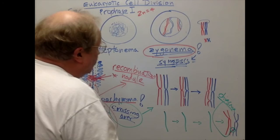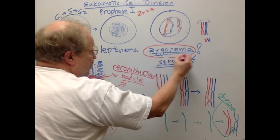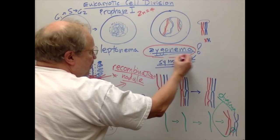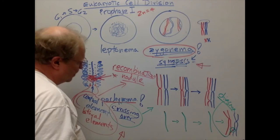A recombination nodule is assumed to be a packet of enzymes carrying out the reaction of crossing over — exchanging chromatids across the synaptonemal complex. The synaptonemal complex starts appearing during zygonema and is present through pachynema while chromosomes are still synapsed.